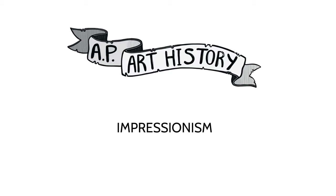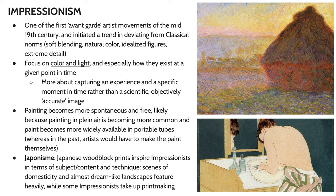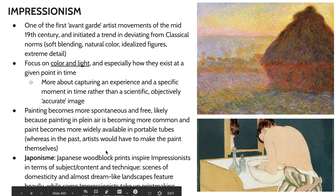We're going to start with Impressionism because it's first. You're probably all familiar with it to some extent — you may have done a project in elementary school with oil pastels creating short, thin lines to make a colorful scene. A lot of students recreate Starry Night, that Van Gogh painting, which we will cover in post-Impressionism. This movement is essentially about color and light, and in most cases you won't see hard outlines around figures — with the exception of works in the Japanese style, which I'll discuss in a moment.